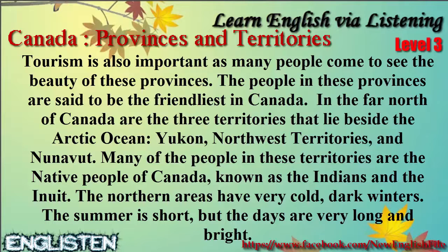In the far north of Canada are the three territories that lie beside the Arctic Ocean: Yukon, Northwest Territories, and Nunavut. Many of the people in these territories are the native people of Canada, known as the Indians and the Inuit. The northern areas have very cold, dark winters. The summer is short, but the days are very long and bright.